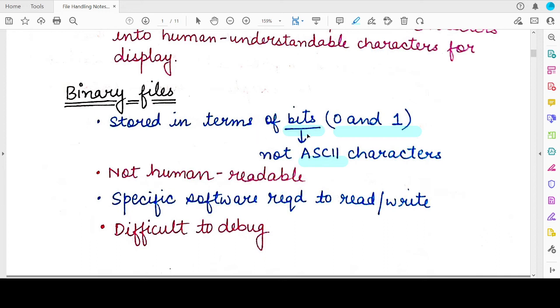But in case of binary files, the content is stored in the form of zeros and ones. And even when you open these files, you will see zeros and ones. It is not human understandable. So you can see that it is something written in zeros and ones, but you cannot make out what do they actually mean.